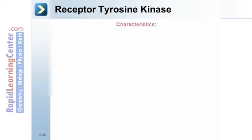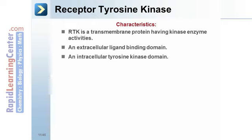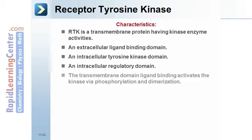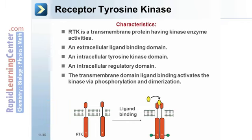Receptor tyrosine kinase (RTK) is a transmembrane protein with kinase enzyme activity. It has an extracellular ligand binding domain, an intracellular tyrosine kinase domain, and an intracellular regulatory domain. Ligand binding activates the kinase via phosphorylation and dimerization. In the schematic, RTK binds a ligand, forms a dimer, and is phosphorylated to become activated.